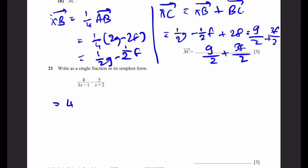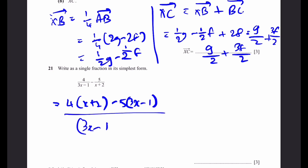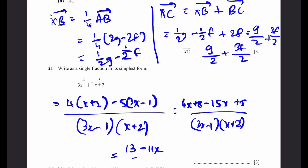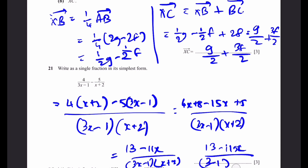Question 21 involves simplifying an algebraic fraction. We write 4(x + 2) − 5(3x − 1) over the product of the two denominators, using cross multiplication. Expanding: 4x + 8 − 15x + 5 over (3x − 1)(x + 2), which simplifies to (13 − 11x) over (3x − 1)(x + 2). This cannot be simplified further, so that is our answer.